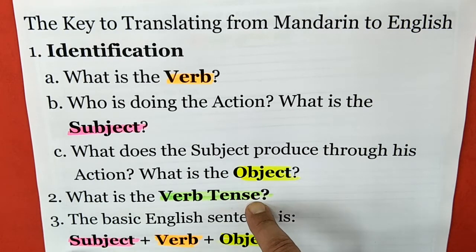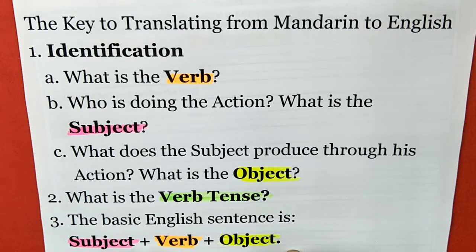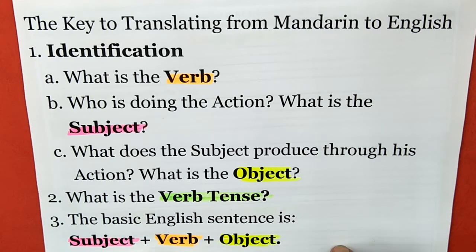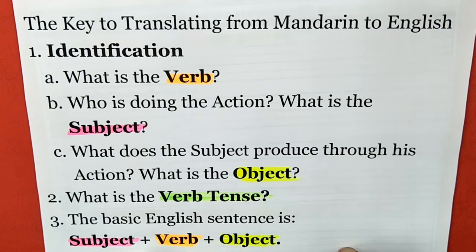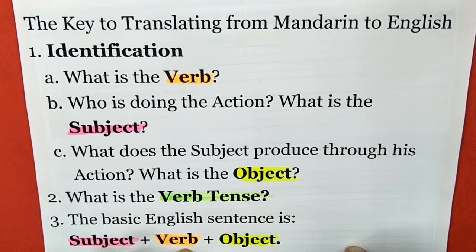Just remember, it's so important to follow the basic English sentence: subject, verb, object. Right now, I want you to take out your colors and color the sentences just like I did. You can stop the video and color. Remember also to write down any notes that Mr. Redition made next to the sentence.